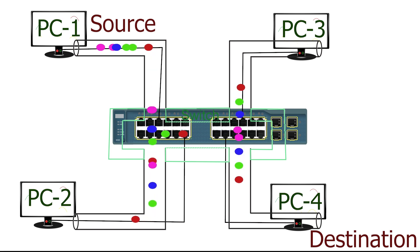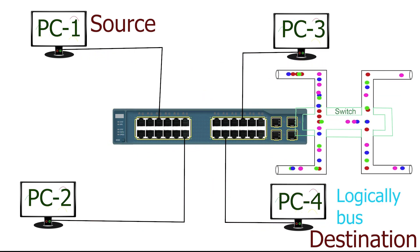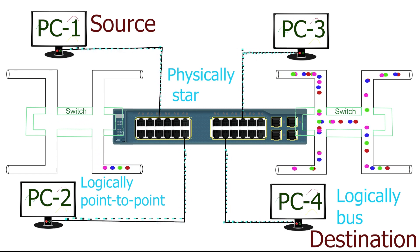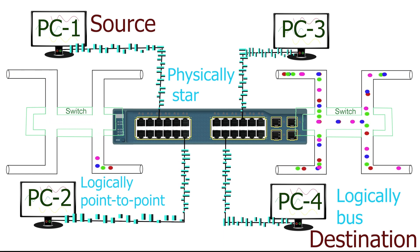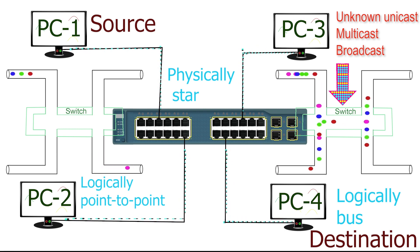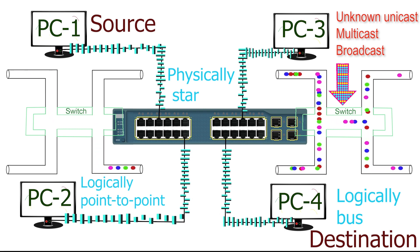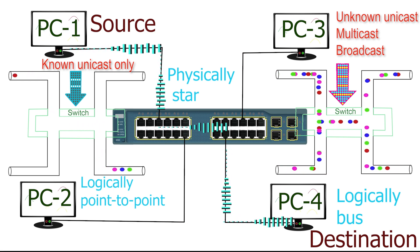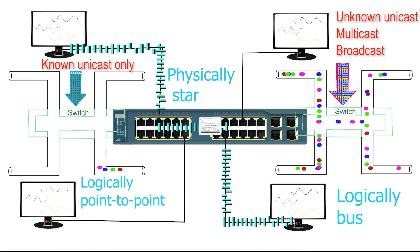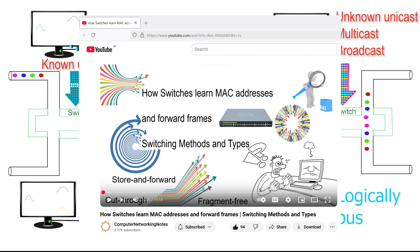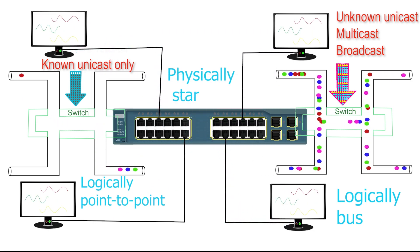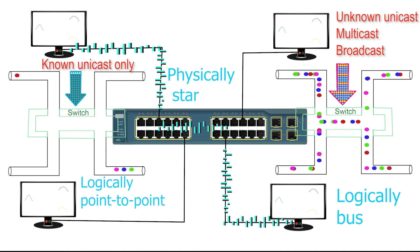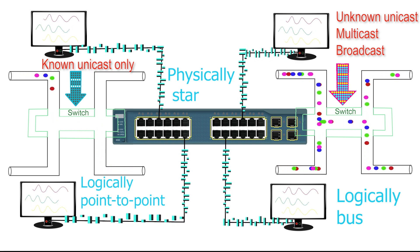After taking a forwarding decision, it converts data frames back into signals and forwards them only from selected ports. If it forwards from all ports besides the incoming port, it creates a logical bus topology. If it forwards only from the port connected to the destination device, it makes a logical point-to-point topology. A switch uses the logical bus topology only when it does not know the frame's destination address or the frame has a broadcast destination. If it knows the destination address, it uses the logical point-to-point topology.